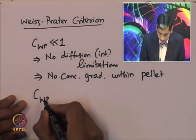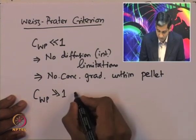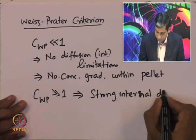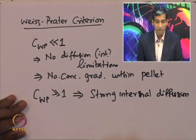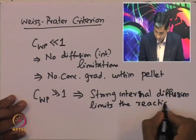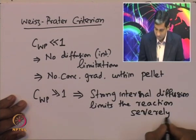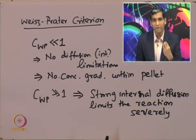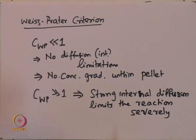Simply by using measurable quantities and known properties of the system, one can decipher using the Weiss-Prater criterion whether internal diffusion is limiting the reaction or not. It is also important to note that while the Weiss-Prater criterion can be used for non-first-order reactions, the effectiveness factor and Thiele modulus for such reactions cannot be obtained using the method illustrated in this lecture. Let us now look at a specific example.